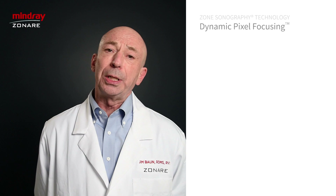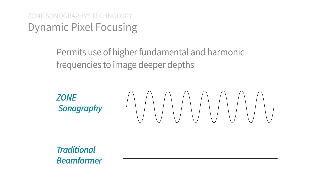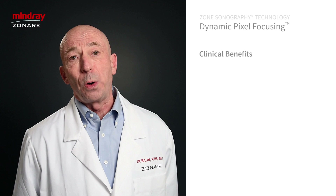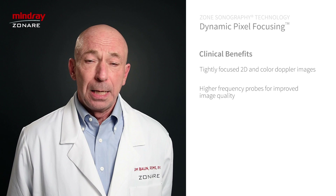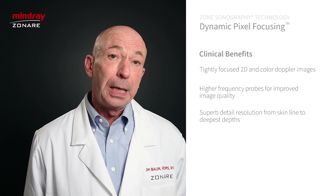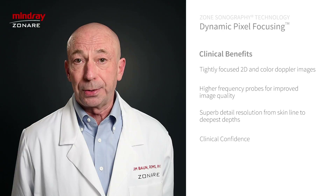Dynamic pixel focusing also permits the use of higher fundamental and harmonic imaging frequencies to image at deeper depths. Traditional beamforming platforms require lower frequencies to image at depth, and the trade-off with lower frequencies is reduced spatial resolution and an image that is comparatively suboptimal to one created with higher frequencies. The clinical benefits of dynamic pixel focusing include tightly focused 2D and color Doppler images, the ability to use higher frequency probes for improved image quality, the maintenance of superb detail resolution from skin line to deepest depths, and clinical confidence in imaging neonates to bariatric patients.